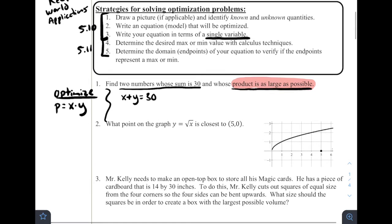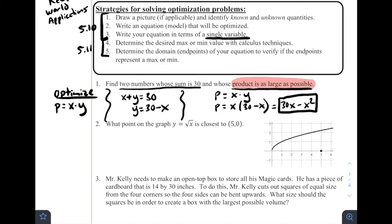Now, our other constraint that we have is we know that the two numbers have to sum up to 30. So sum means to add. So X plus Y has to be equal to 30. Now in general, there's no picture for this particular one, but we've identified known and unknown quantities. We're writing an equation model that's going to be optimized. And then now the goal is to write our equation in terms of a single variable. So in this case, what we're going to want to do is we're going to try to essentially combine these two equations. I'm going to get Y by itself. We're going to say that Y is equal to 30 minus X. And then I'm going to take that P is equal to X times Y, and we're going to substitute in for Y. So P is going to equal X times 30 minus X, which means that our product equation is going to be equal to 30X minus X squared.